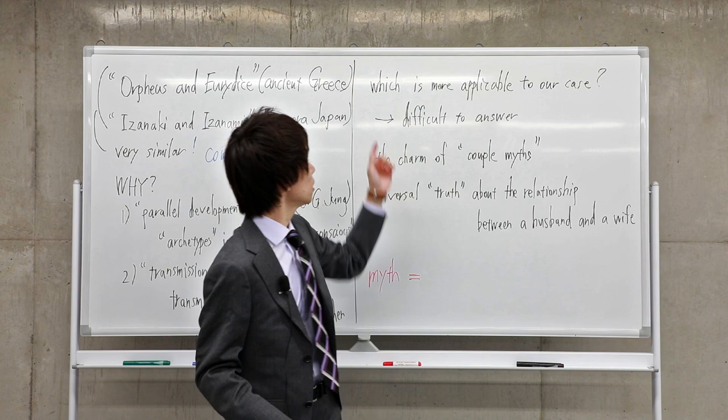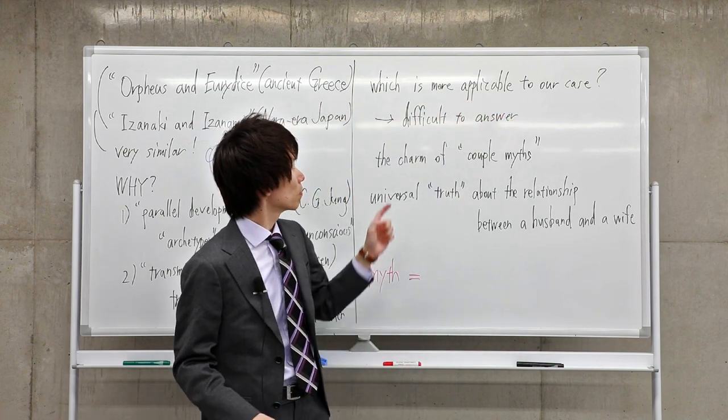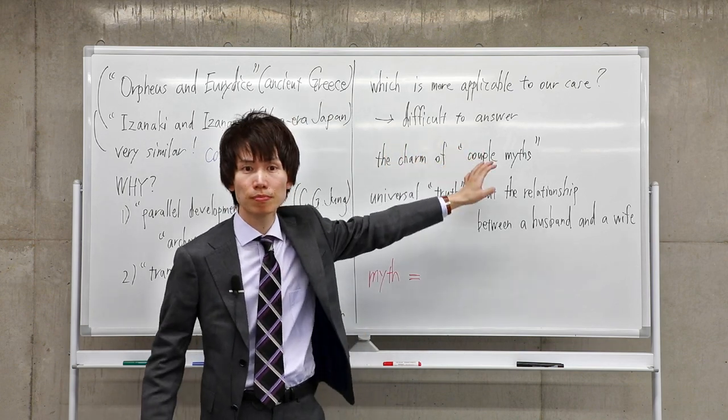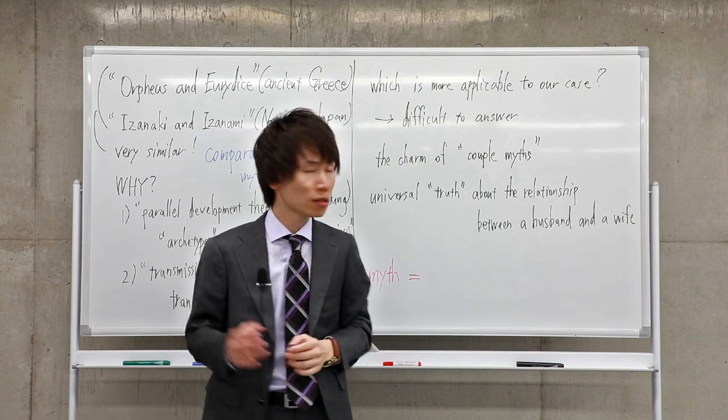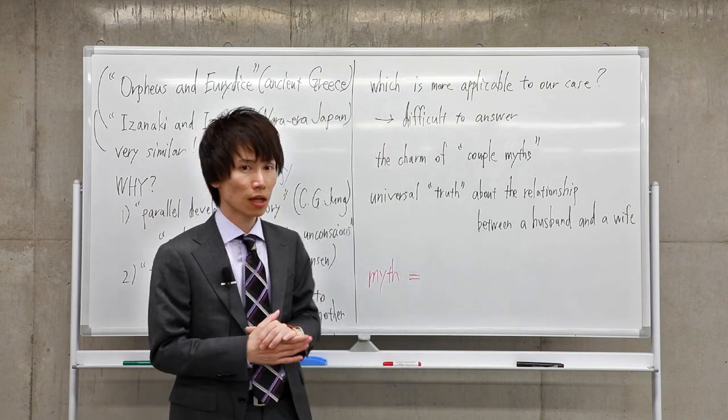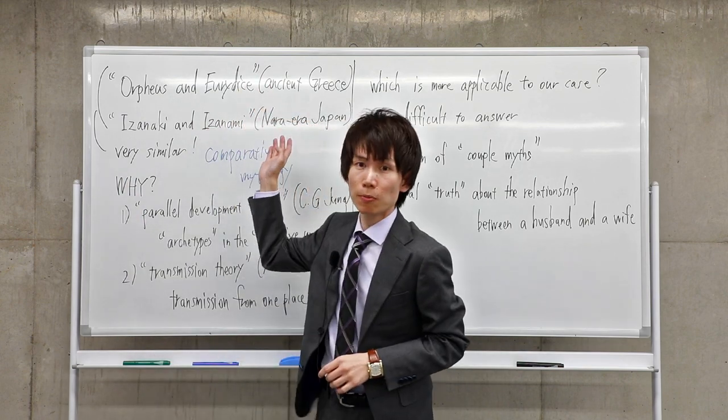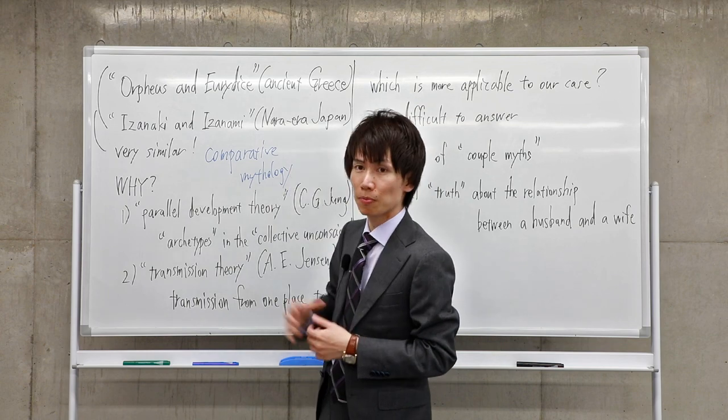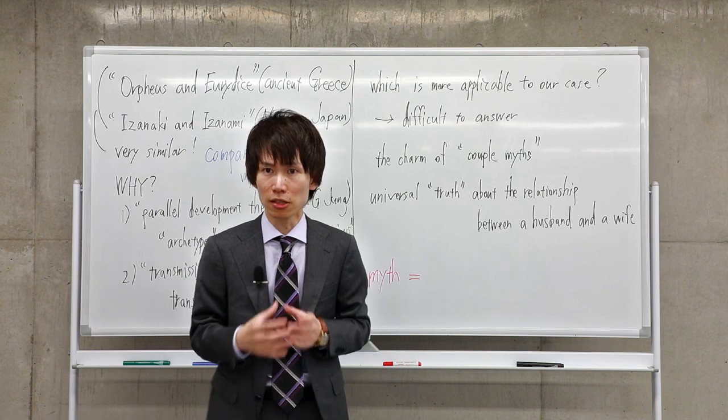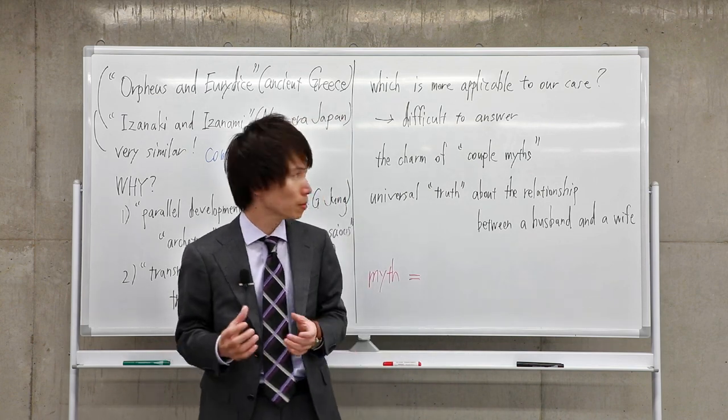So which is more applicable to our case? I think it is very difficult to answer this question. But the important point is that these two stories are very similar to each other. I think ancient Greek people and Nara-era Japanese people share the same perception, the same feelings about human beings, about married couples to be precise.